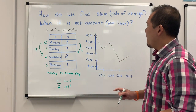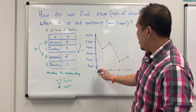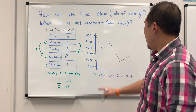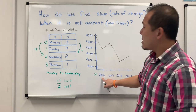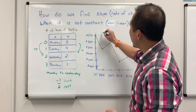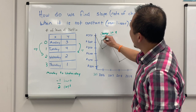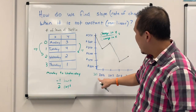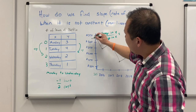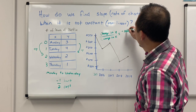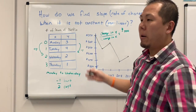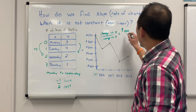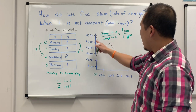Let's look at our graph here. If I wanted to find the rate of change between — this is really 2015, because if we're going by years here I don't have a graph break. So if I want to find the rate of change from 2015 to 2016, I'm going to do the change in Y over the change in X. From 2015 to 2016, the change in Y is $350 to $250, so minus $100. And we're going over one year, so it is $100 in one year.